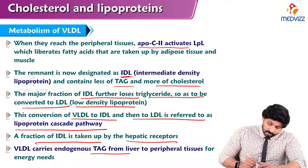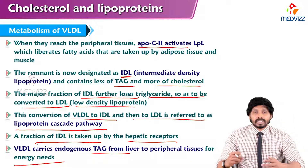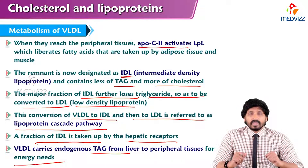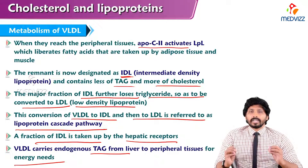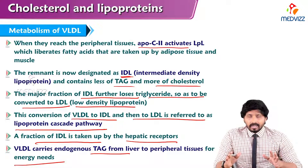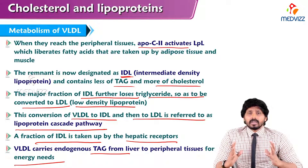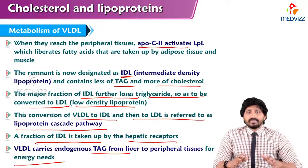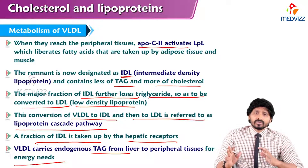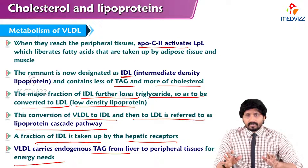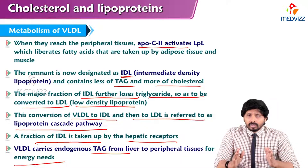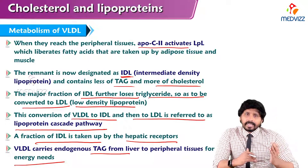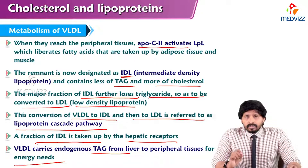VLDL carries endogenous TAG from the liver to peripheral tissues for energy needs. That is all about VLDL metabolism. The important take-home message is: VLDL are the lipoproteins which transport triglycerides synthesized in the liver to extrahepatic tissues for energy purposes. VLDL is also involved in the making of LDL by decreasing its TAG content. Thanks for watching.